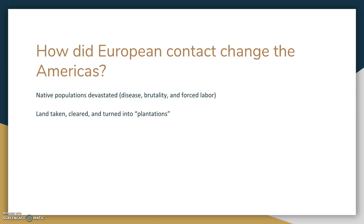Another way European contact changed the Americas was that they took land, cleared it, and planted large farms which were known as plantations.